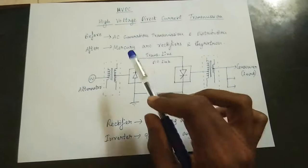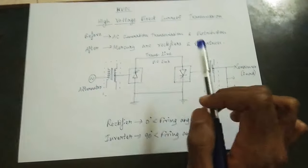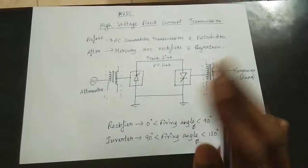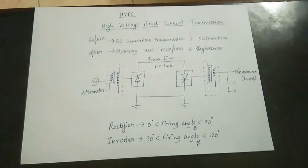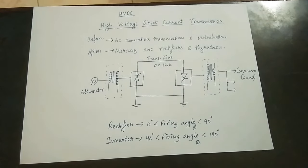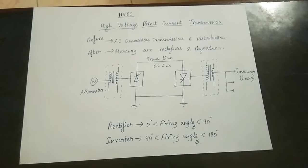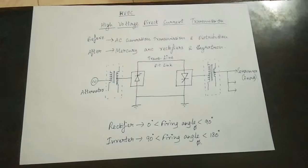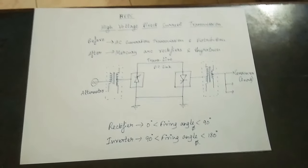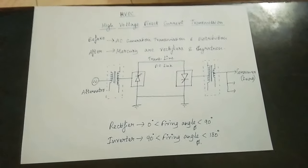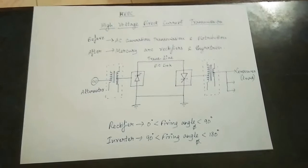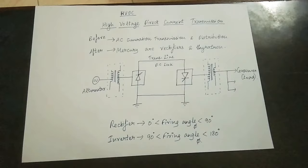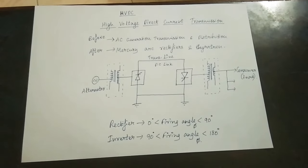Mercury arc rectifiers and thyratrons were created to enable DC conversion. This is how the DC system was created. You can see this in the circuit diagram.